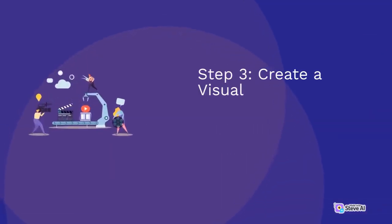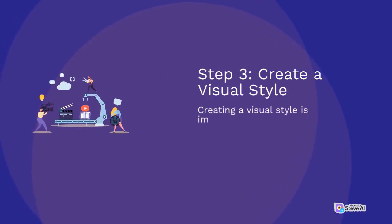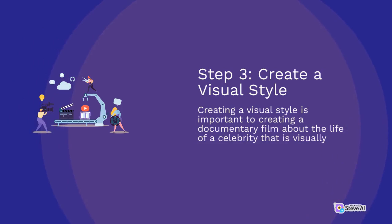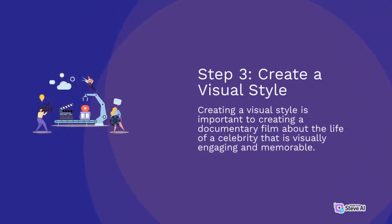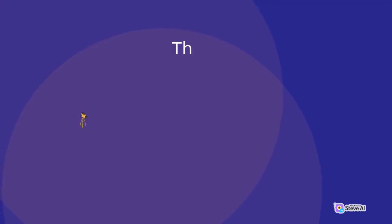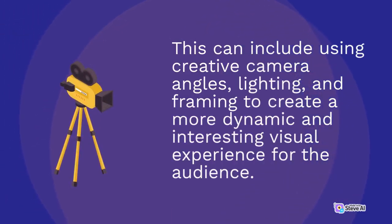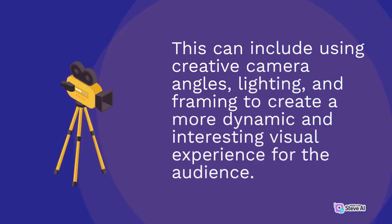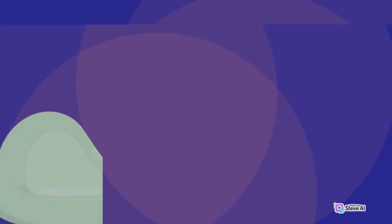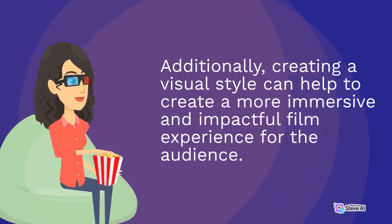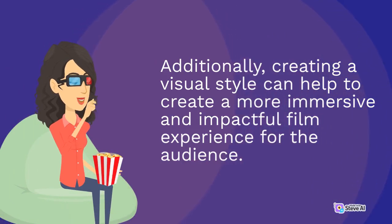Step 3: Create a visual style. Creating a visual style is important to producing a documentary film that is visually engaging and memorable. This can include using creative camera angles, lighting, and framing to create a more dynamic and interesting visual experience, and can help to create a more immersive and impactful film experience for the audience.